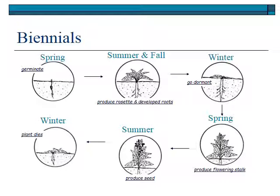Biennials have an interesting growth form. They germinate in spring one year and grow all that first year in just a leaf-forming stage — they don't produce seeds. They develop basal leaves and roots that whole first year, then go through one winter in a dormant stage. In the second spring they start to grow again, and this time they grow up and produce seeds. Then in the winter of that second year, they die. We have quite a few biennials on rangeland that persist as a rosette the first year and then produce seed the second year.